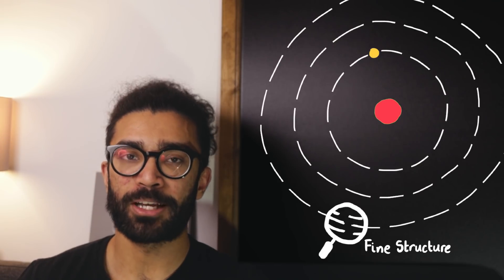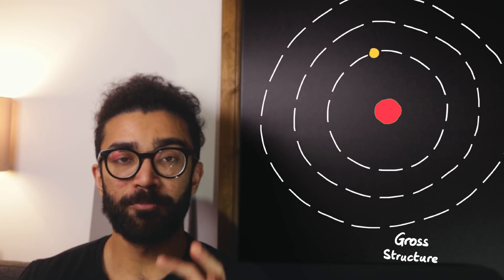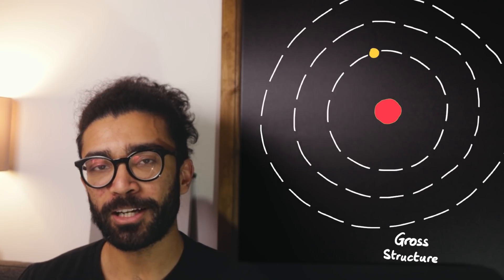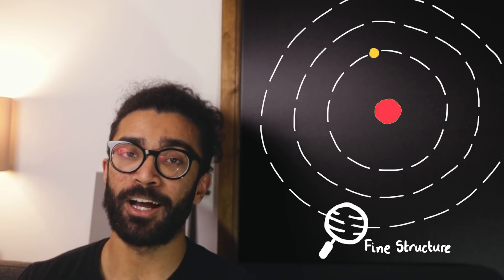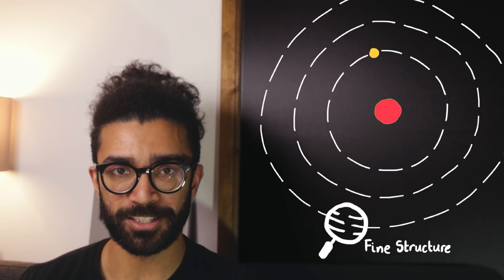This is known as the fine structure of the hydrogen atom. The original levels that we saw were known as the gross structure, because this is the highest level structure that we see. And when we look a bit closer, we see the fine structure. Turns out that when we look even closer, we see a hyperfine structure too, but we won't go into too much detail about that here.